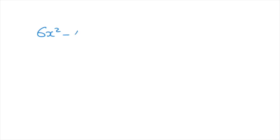Say we're given 6x squared minus 12x, and we're asked to write this expression in its fully factored form. The method doesn't change — we can still follow the same two steps. Step one: we need to find the highest common factor of all the terms in the expression, in other words the highest common factor of 6x squared and 12x.